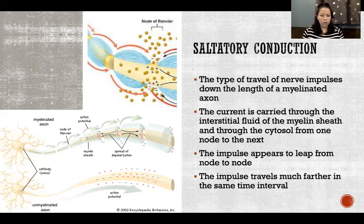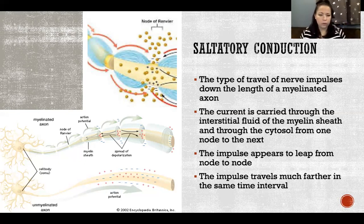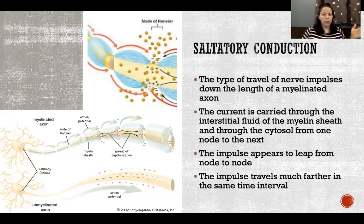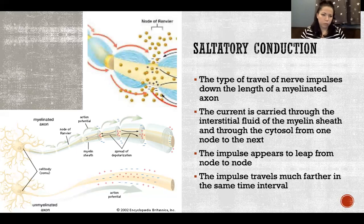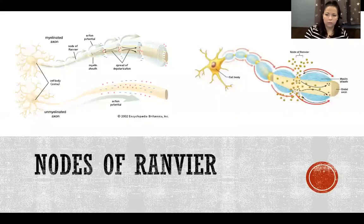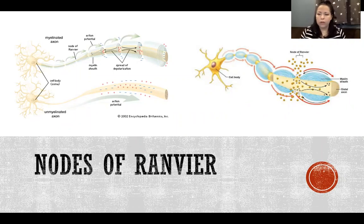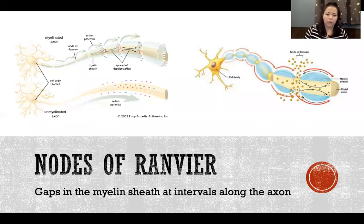Because the impulse is hopping further and faster in saltatory conduction compared to continuous conduction — which goes segment by segment — it causes the impulse to travel from the cell body to the end of the axon much faster. That's the most important function of myelination: to speed up conduction. The nodes of Ranvier are the small gaps between the myelinated sections of the axon.